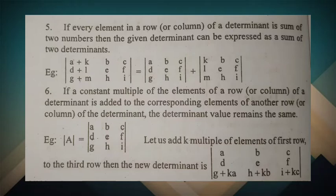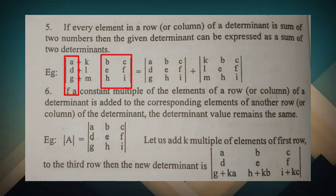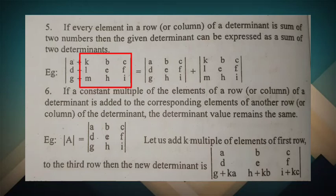For example, the first column elements are a plus k, d plus i, and g plus m. The original general determinant has elements a, d, g in the first column; b, e, h in the second column; and c, f, i in the third column. The second determinant has k, l, m in the first column; b, e, h in the second column; c, f, i in the third column. This sum of the two determinants equals the original.